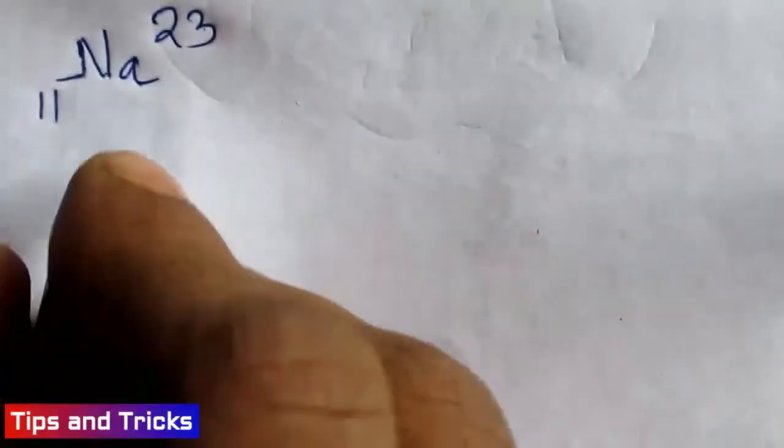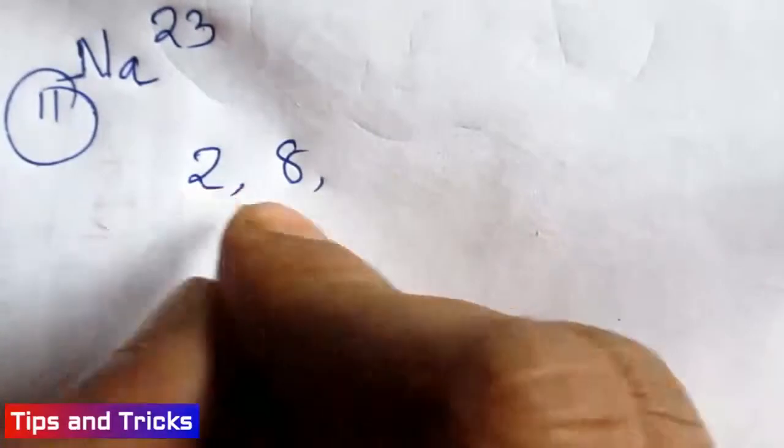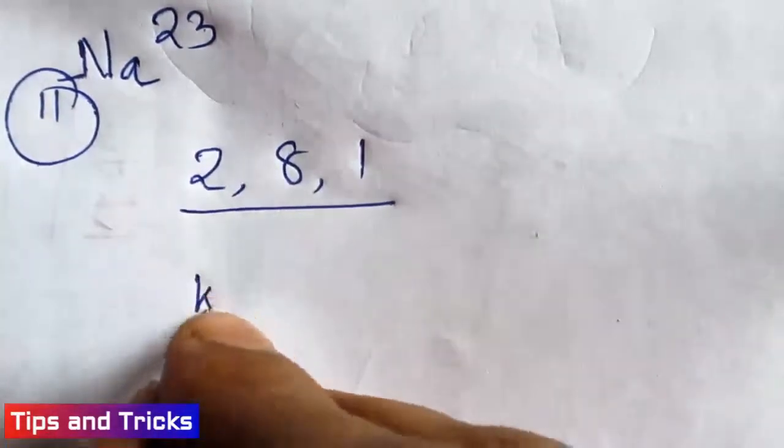Now take an atom, sodium Na-23. 11 is the atomic number. The electron configuration is like 2, 8, 1.